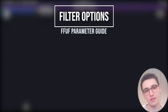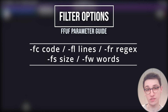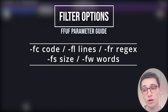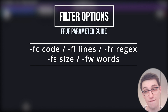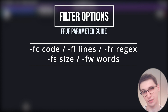We can also filter out specific entries. Use -fc to filter out status codes — for example -fc 200 will hide all 200 responses. Use -fl to filter by lines, -fr to filter by regex, -fs to filter by specific response sizes (the one we used in the demo), and -fw to filter by word count in a response.